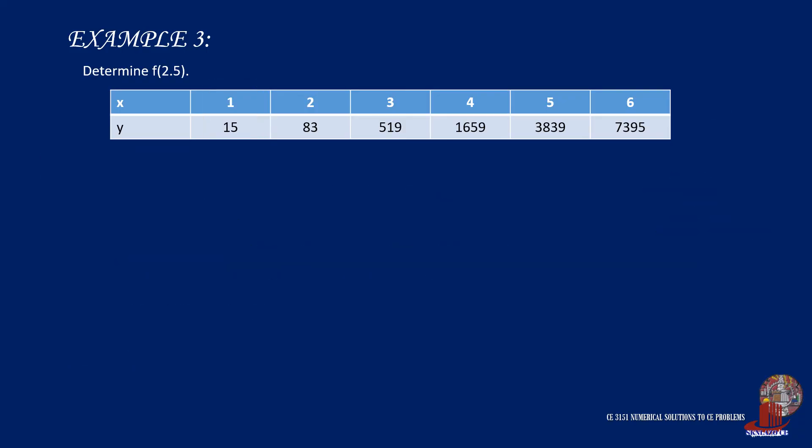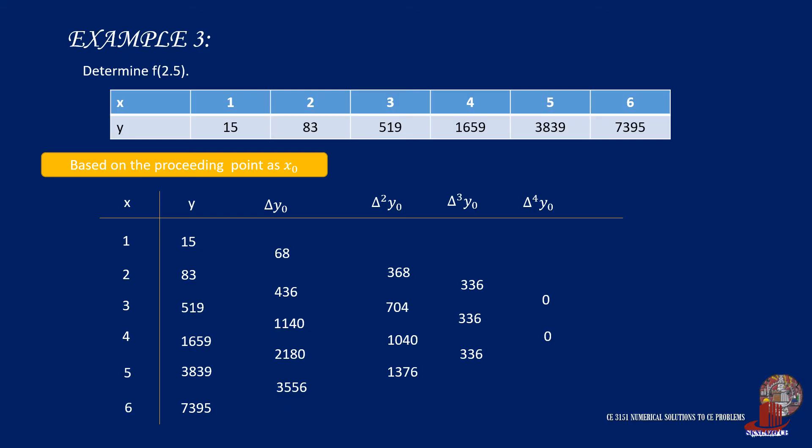An alternative way is done by basing the computation from the point which precedes the required. If we are to find y, if x is 2.5, the preceding point is 2. So from the same difference table, instead of using the leading forward differences, we would trace the values from point to 83.